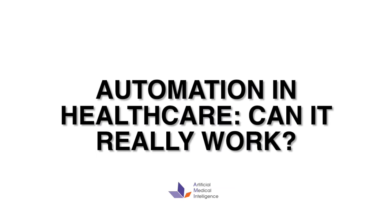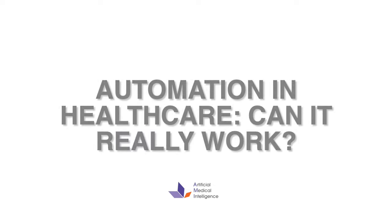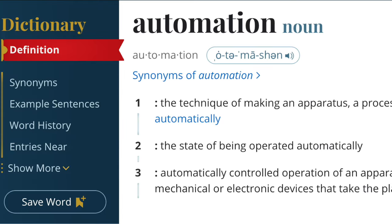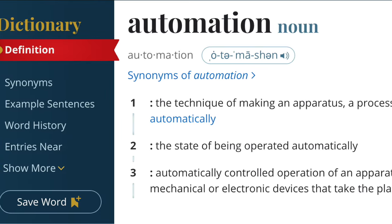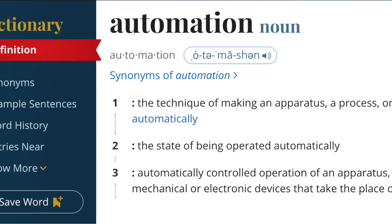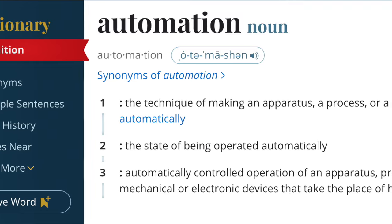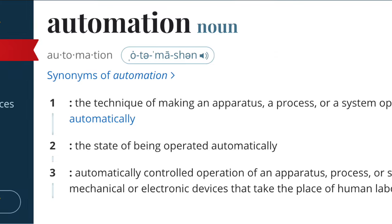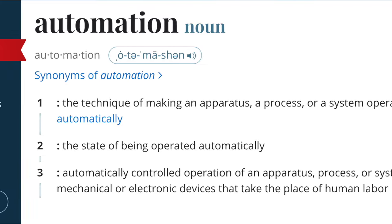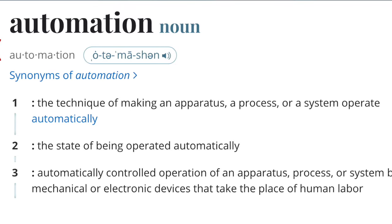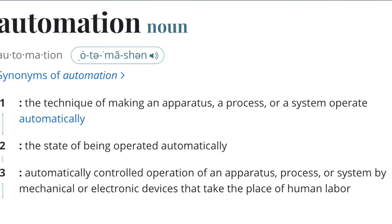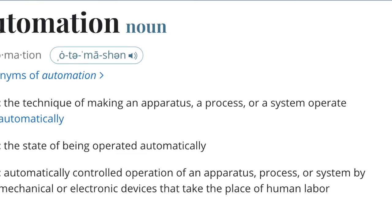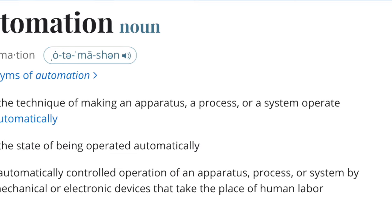Automation by definition is confounding in its own right, as follows: the technique of making a process or system operate automatically. The word derivation is in the definition, so by definition, meaning the state of being operated automatically or automatically controlled operation of a process or system by mechanical or electronic devices that takes the place of human labor.